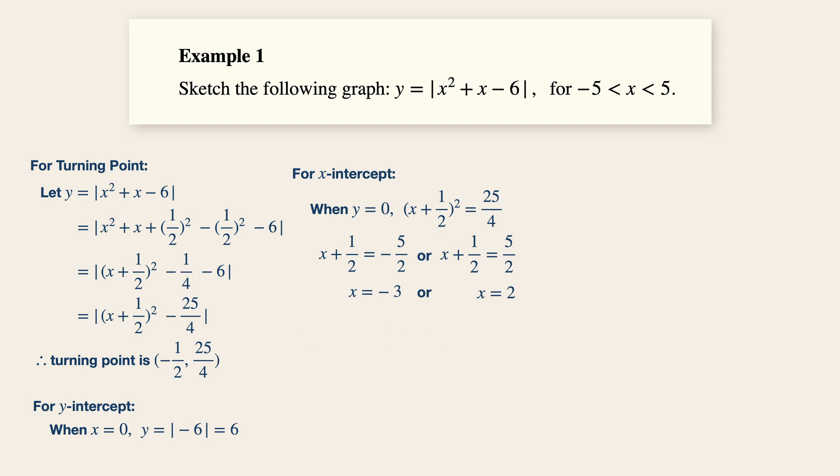Now, the final step is to get the domains. So when x is equals to minus 5, y is equals to modulus 25 minus 5 minus 6, giving us a value of 14. And when x is equals to 5, y is equals to 25 plus 5 again minus 6, which gives us another value of 24.